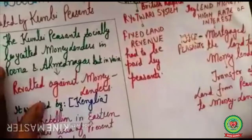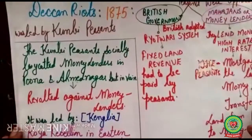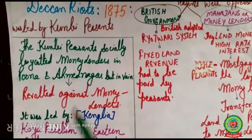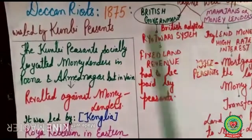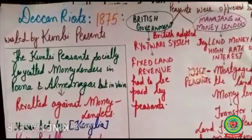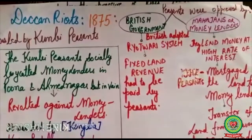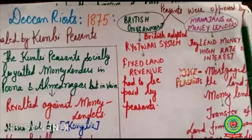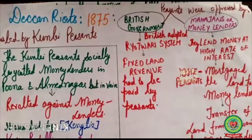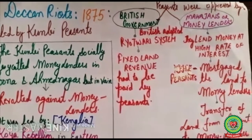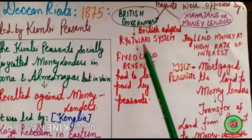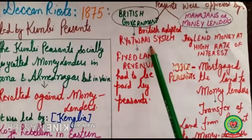Apart from the Indigo Uprising, the other issue was the Deccan Riots. The Deccan Riots took place in South India in 1875, involving different tribal communities of peasants, and were specially led by the Kunbi community. The Kunbi peasants were oppressed by both the British government and moneylenders. The British had adopted the Ryotwari system — a system of direct taxation between the peasants and the British government, under which fixed land revenue had to be paid by the peasants.